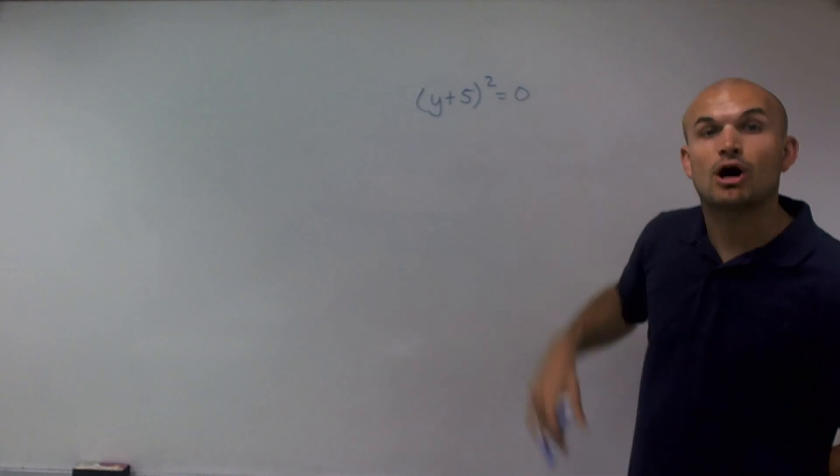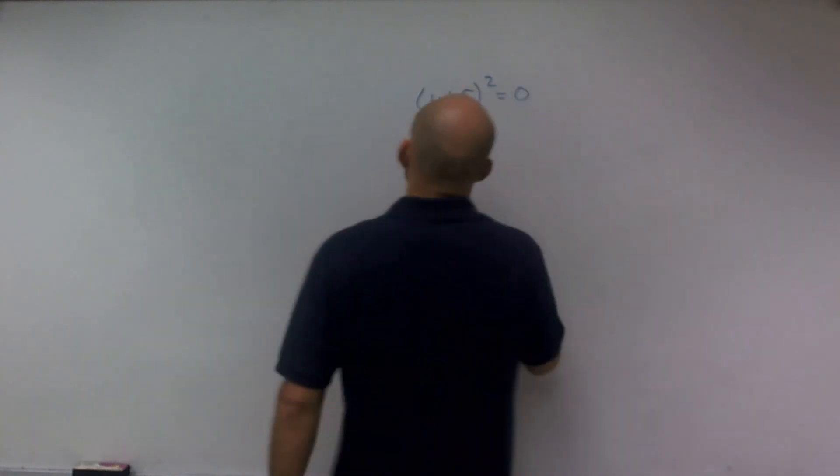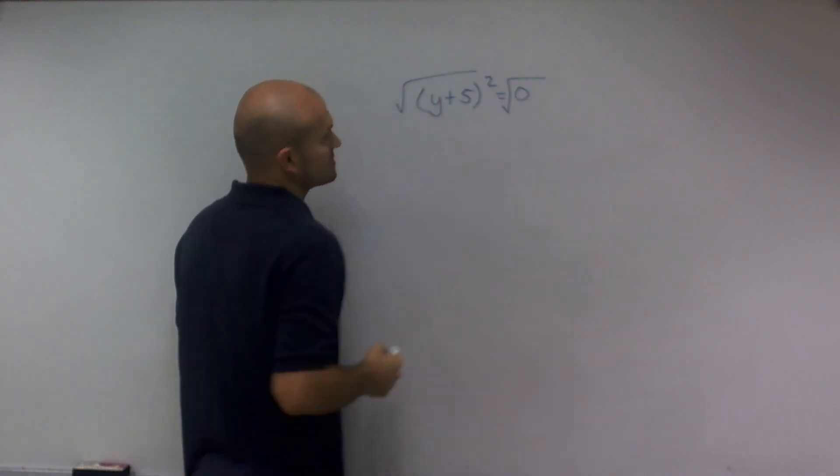So what I'm going to do is I need to undo the squaring of y plus 5. So to undo the squaring of y plus 5, I need to take the square root of both sides.